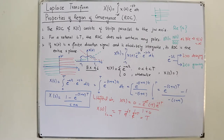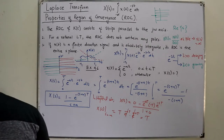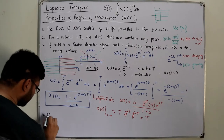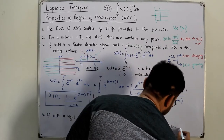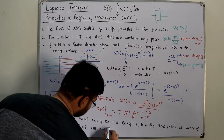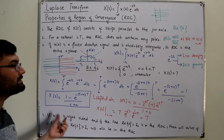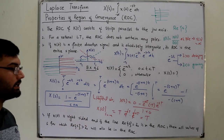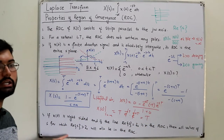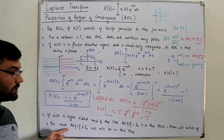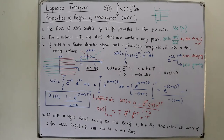Property number four: if x(t) is a right-sided signal and the line real(s) = σ₀ is in the ROC, then all values of s for which real(s) > σ₀ will also be in the ROC. A right-sided signal is one that is 0 from negative infinity until some value t, and then exists till positive infinity.